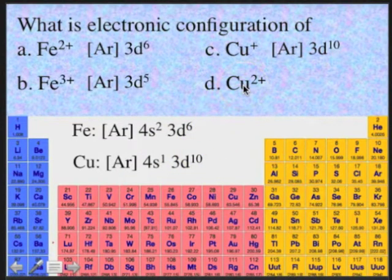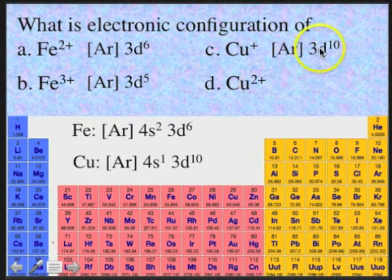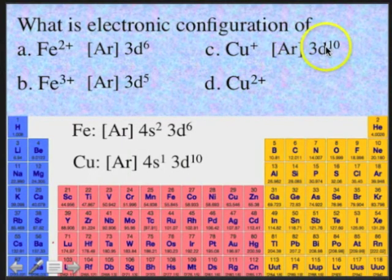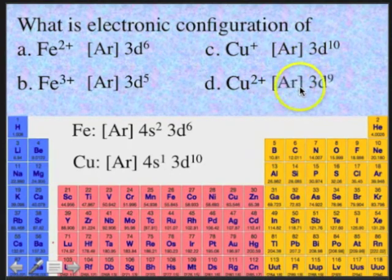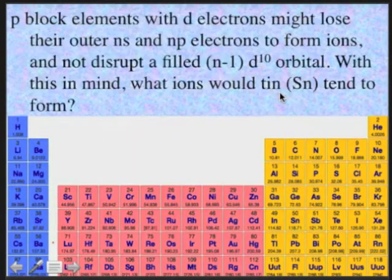For cupric, Cu2+ needs to lose one more electron. It's going to take it from the 3d10, and you'll have argon core, 3d9.